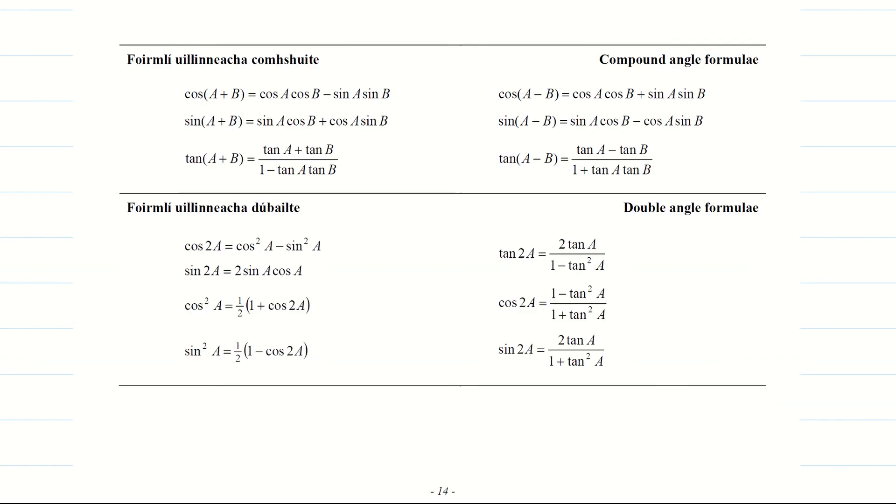To help us with our proof we're going to go to page 14 in our log tables. You can see our cos 2a double angle formula here. It's given to us as cos squared a minus sin squared a. So that's what we want to prove.